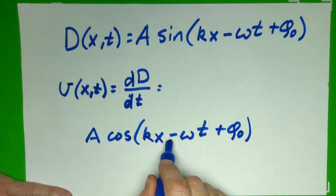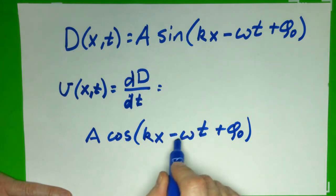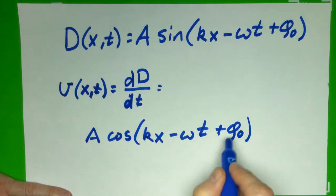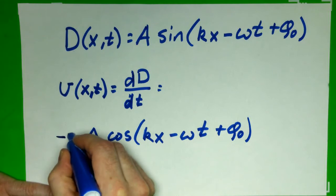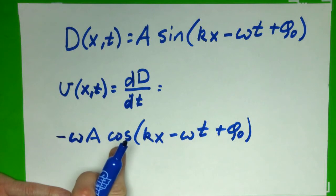But remember, there is a minus sign there. So I'm going to have to multiply this whole thing, doing the chain rule, by the derivative of this, which is negative ω. I'm going to go ahead and put that out front, negative ω. And I have the velocity of the particles oscillating about their equilibrium point. And it ought to be a sinusoidal function.